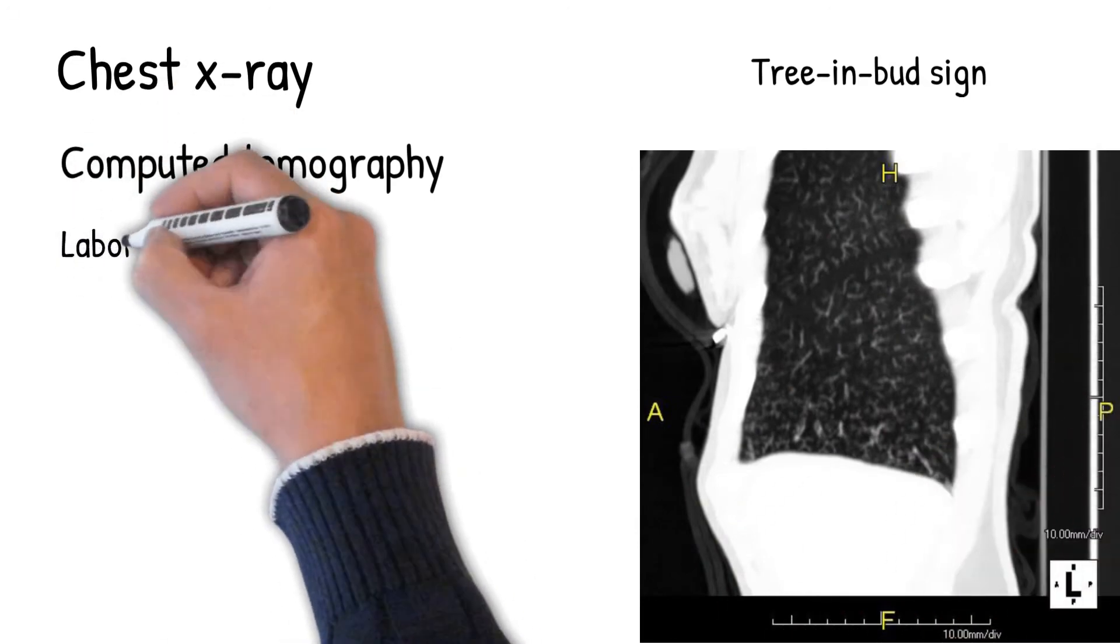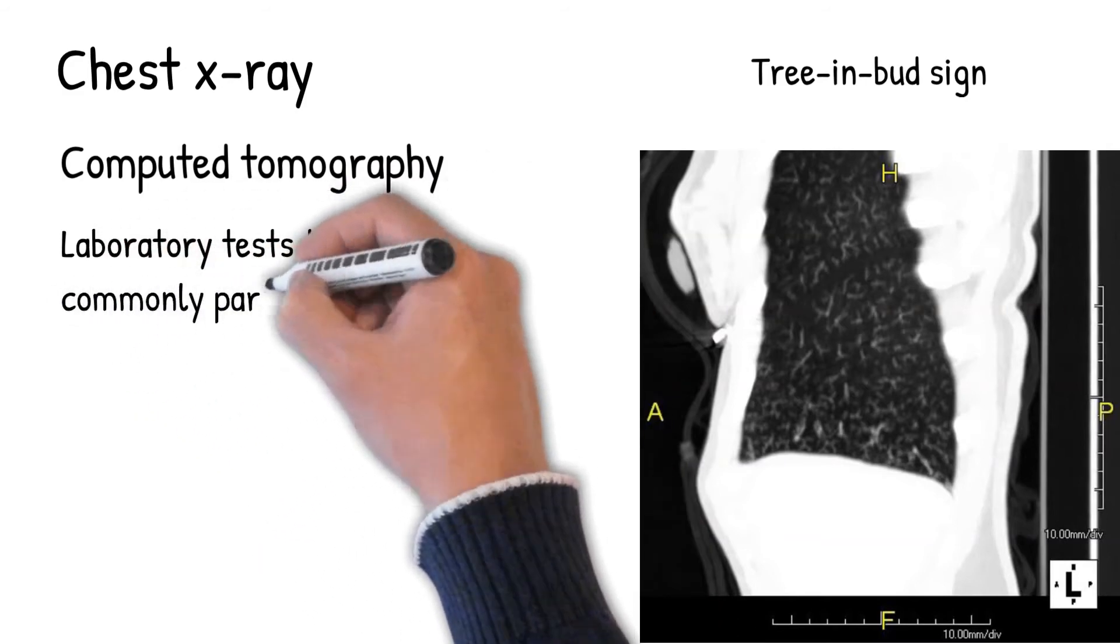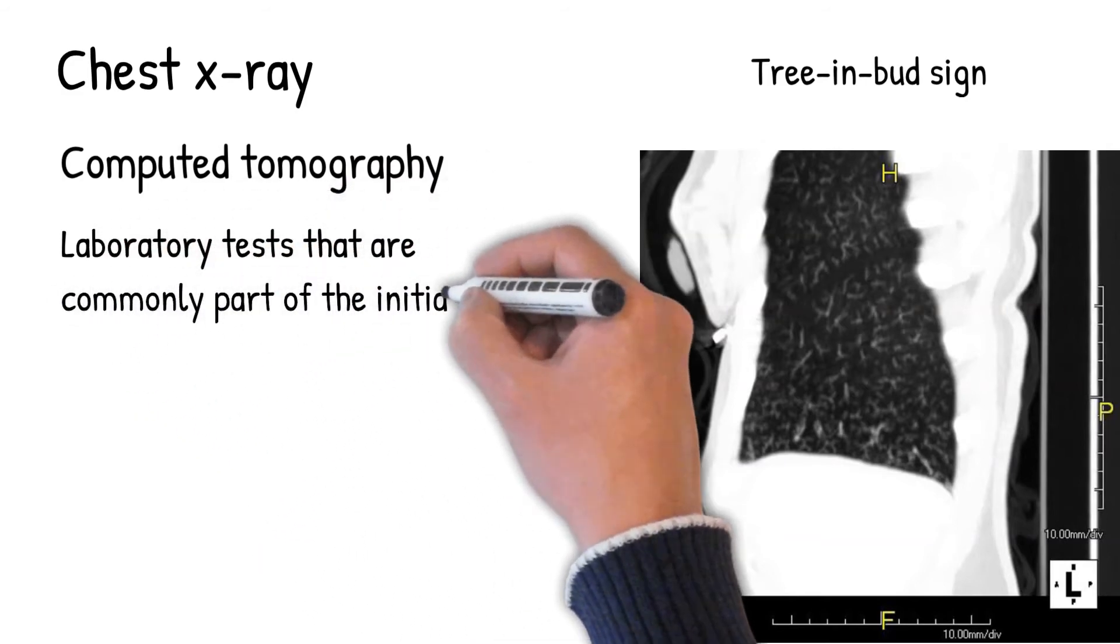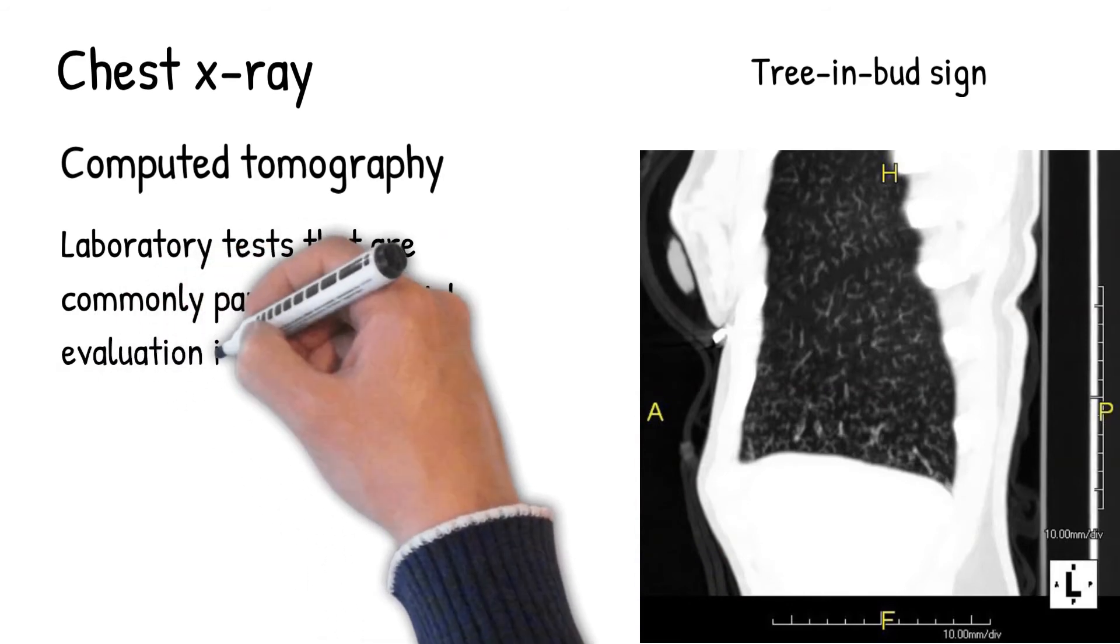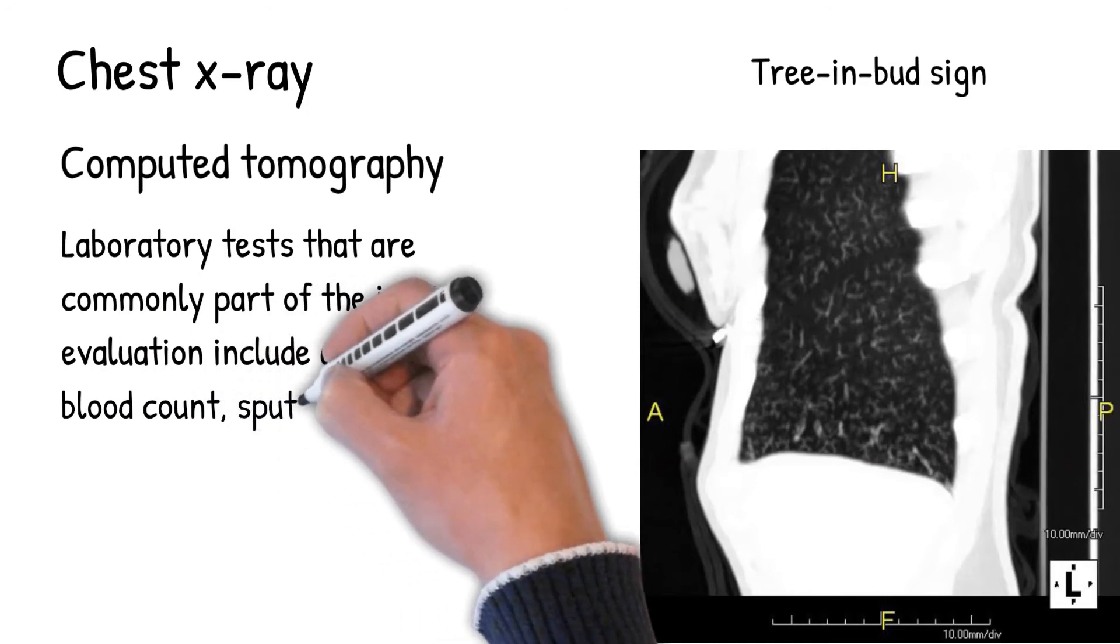Tree-in-bud sign is a finding on a CT scan that indicates some degree of airway obstruction. The CT shows multiple areas of centrilobular nodules with a linear branching pattern, usually representing endobronchial spread of infection.